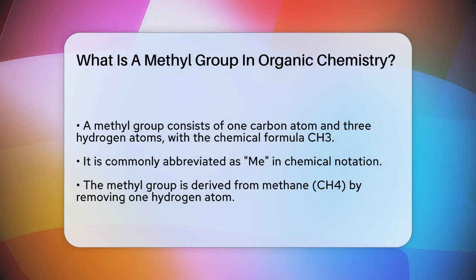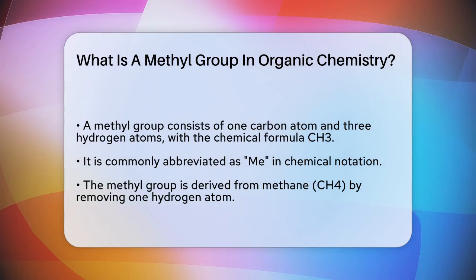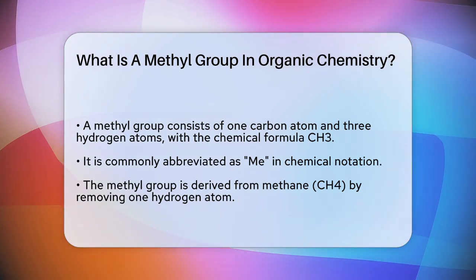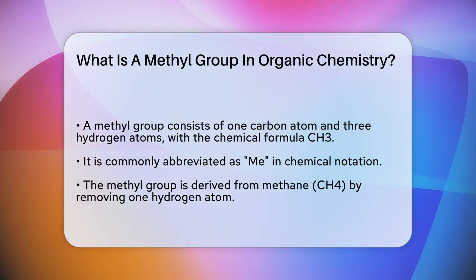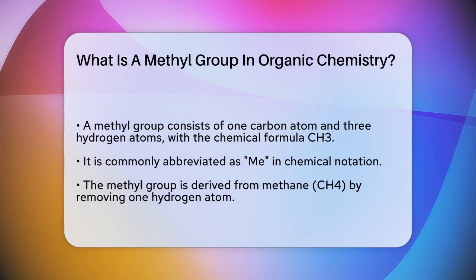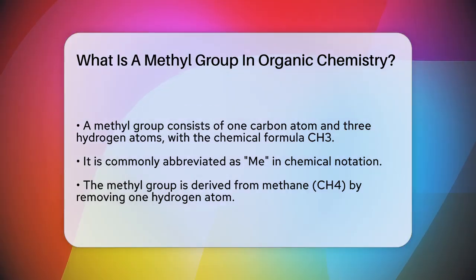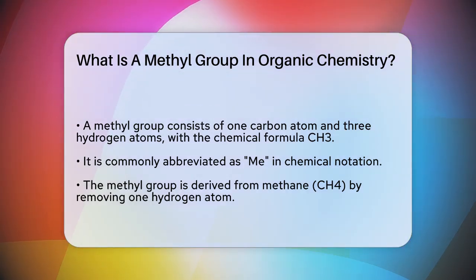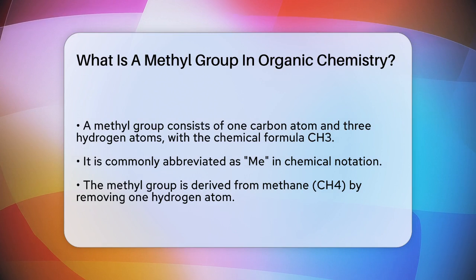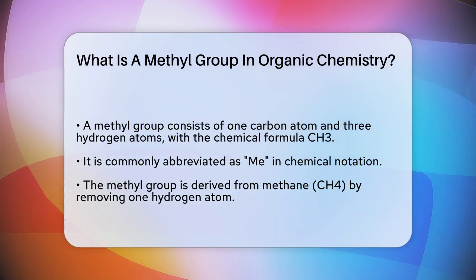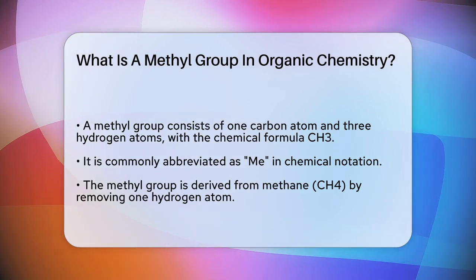It's often abbreviated as Me in chemical notation. To understand where the methyl group comes from, think about methane, which is a simple gas with the formula CH4. If you remove one hydrogen atom from methane, you're left with a methyl group. This group is now free to bond with other atoms or molecules.